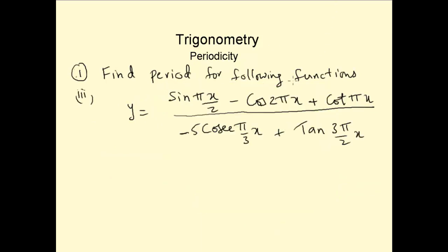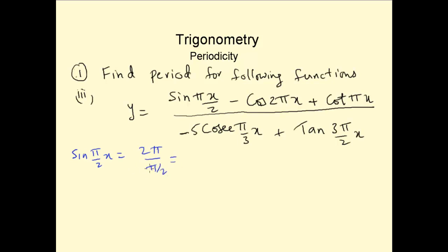Find the period for: y = sin(πx/2) - cos(2πx) + cot(πx/(-5)) - csc(πx/3) + tan(3πx/2). The period for the whole function is the LCM of the periods of each individual term. For sin(πx/2), the period is 2π/n where n = π/2, so π's cancel and the period is 4.